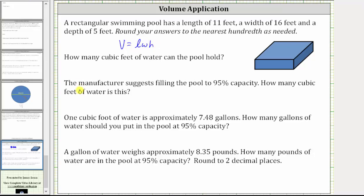So for this first question, we are assuming we fill the pool all the way to the top, and therefore the volume is equal to 11 feet times 16 feet times five feet. Notice how this gives us the units of cubic feet, and 11 times 16 times five is 880, and therefore the volume is 880 cubic feet.